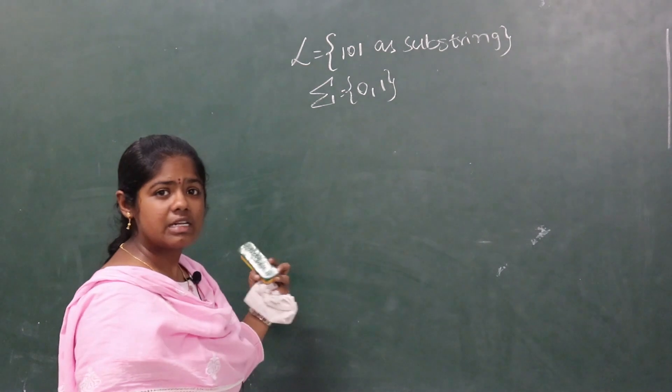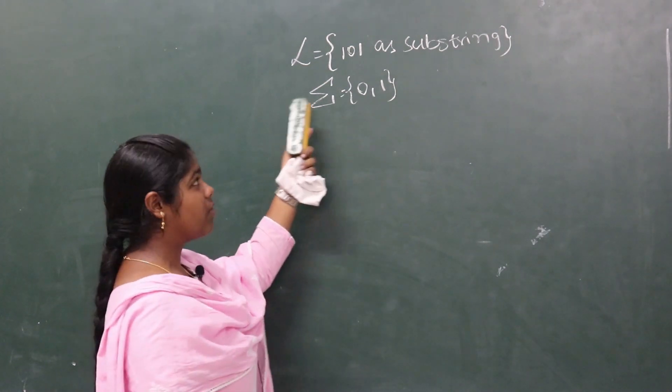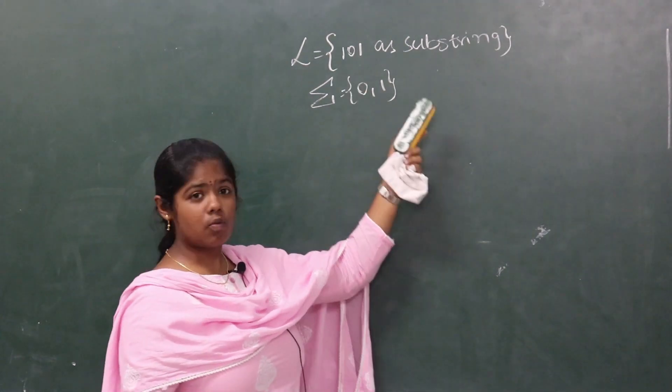The input alphabet to be accepted is 0,1, and the language should accept 101 as substring.